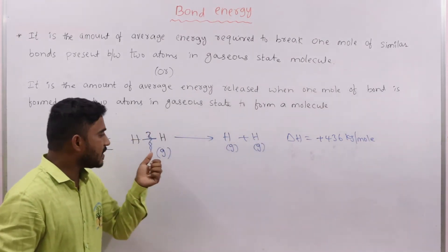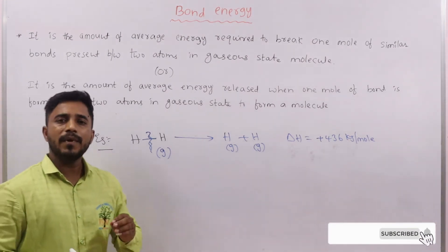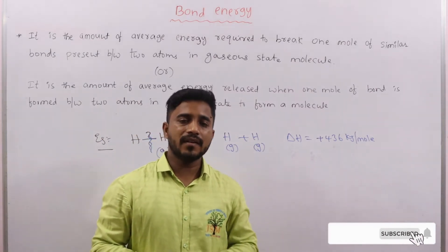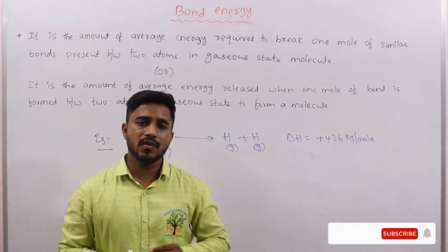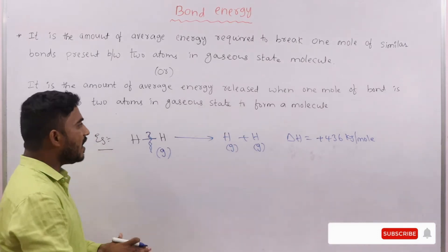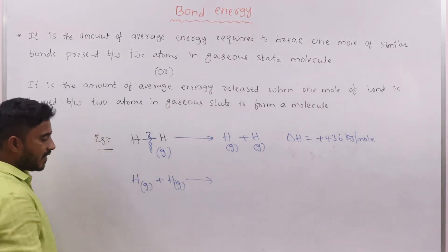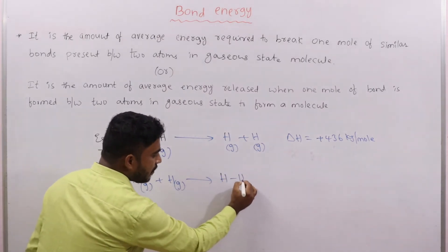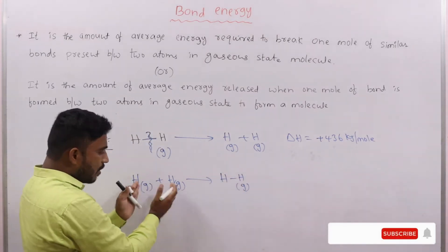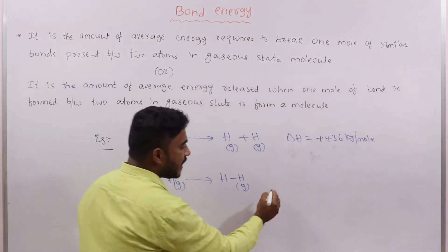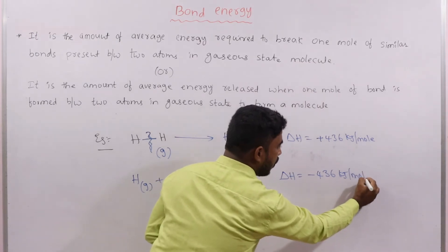The second definition: the minimum amount of energy released when one mole of bond formation takes place between two atoms in gaseous state to give a molecule is known as bond energy or bond enthalpy. Taking two hydrogen atoms in gaseous state — when they combine, they form a hydrogen molecule in gaseous state. When bond formation takes place, the energy released is indicated with a negative sign: minus 436 kilojoules per mole.